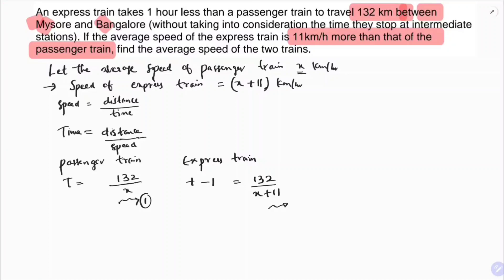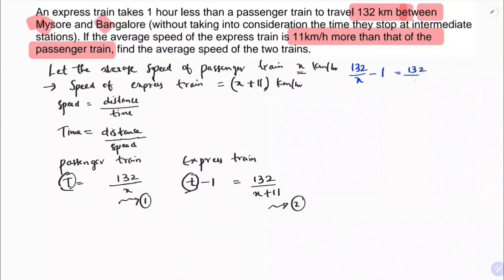Now I'll substitute the value of time into the equation. In place of t I'll write this value: 132 divided by x minus 1 equals 132 divided by (x plus 11).